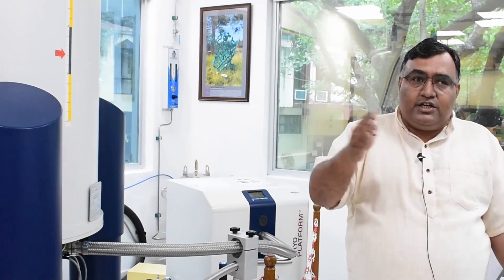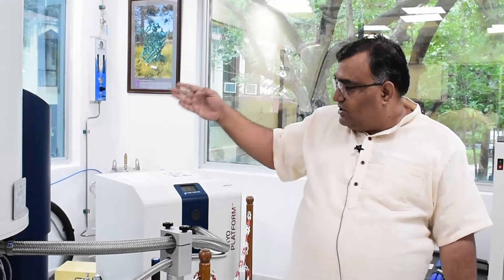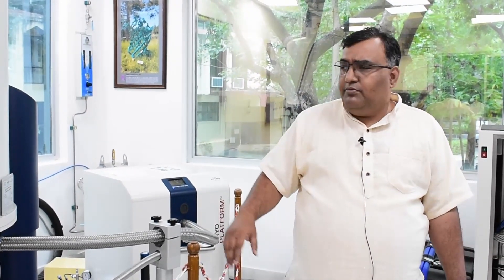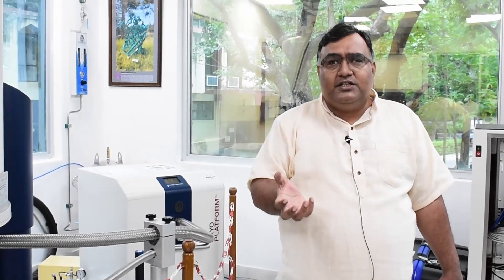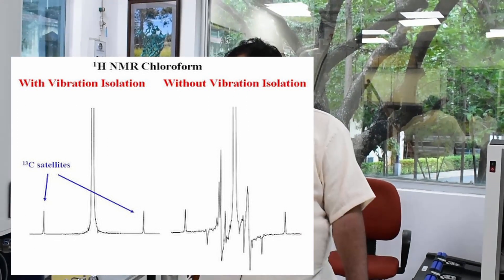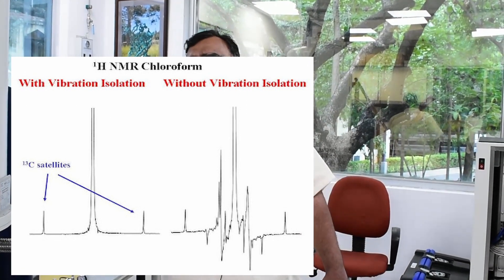So during the experiment if you have such kind of oscillations and your magnet instead of at 14.1 Tesla, the last digits get changed, your magnetic field, the sample is experiencing will also not be uniform. Because it won't be uniform, your signal will become broad. So you won't be able to detect reasonable data.